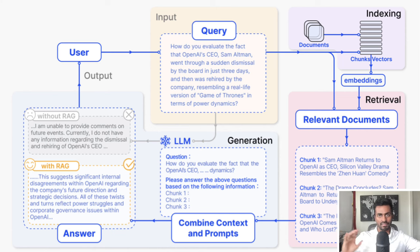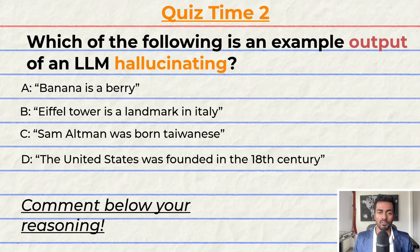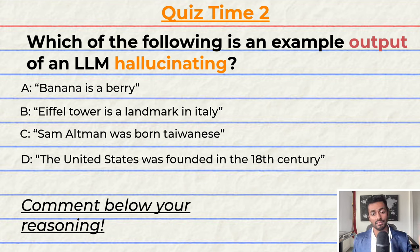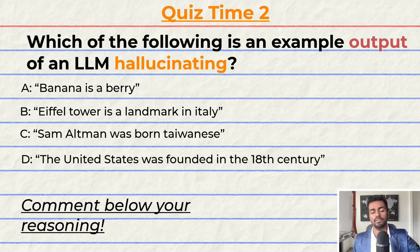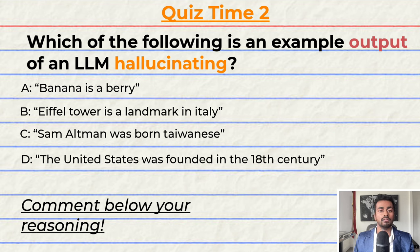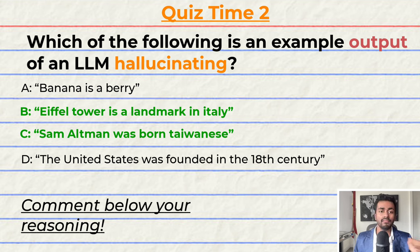So this is an overview of the entire RAG pipeline. Quiz time — which of the following is an example output of an LLM hallucinating? A: Banana is a berry. B: Eiffel Tower is the landmark in Italy. C: Sam Altman was born Taiwanese. Or D: The United States was founded in the 18th century. Note that multiple options may be correct. The correct answers are B and C — but can you tell me why? Give your reasoning down in the comments below and let's have a discussion.